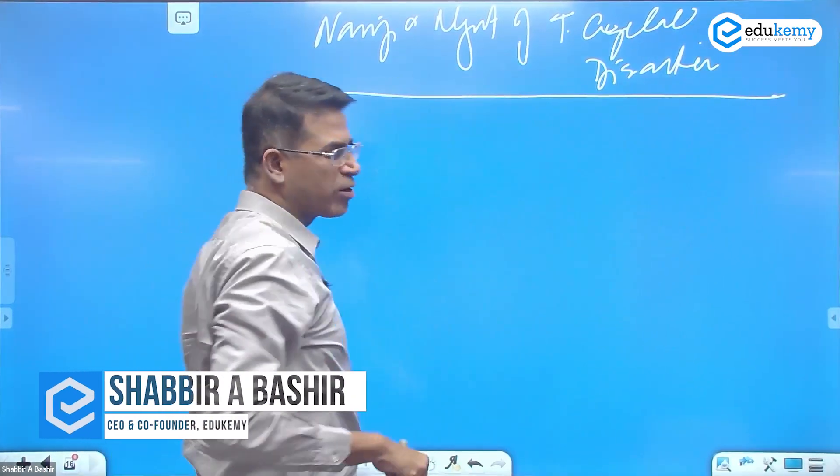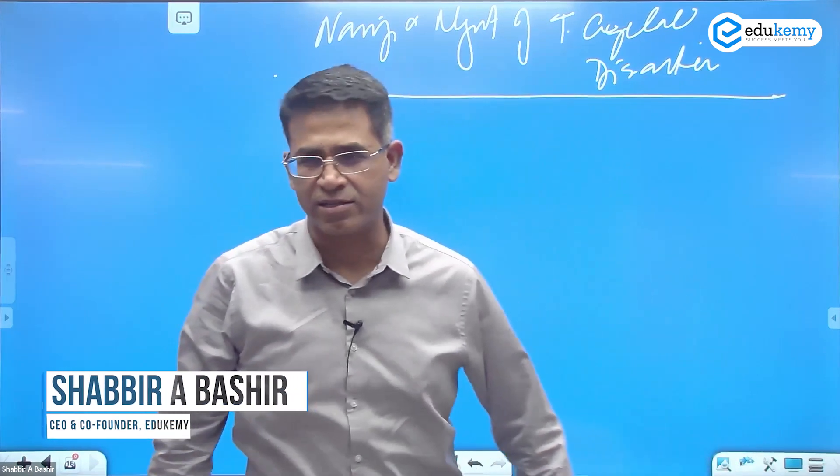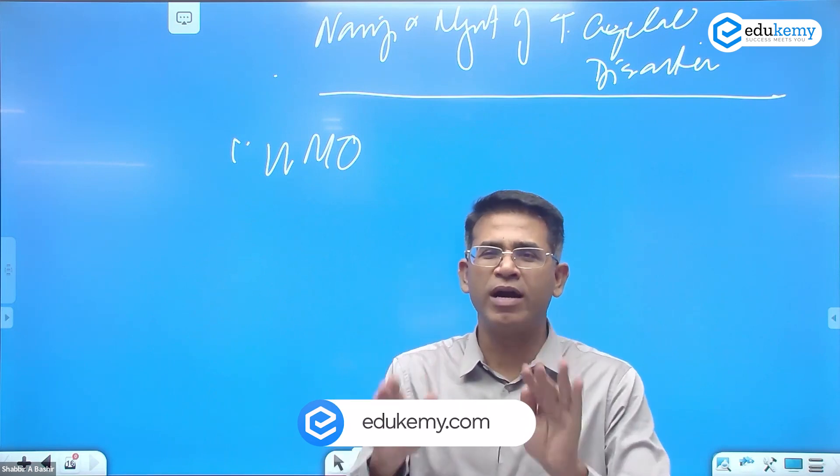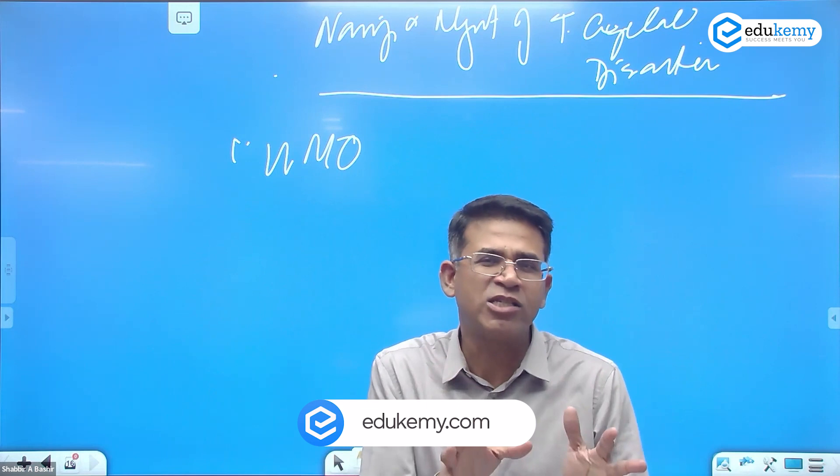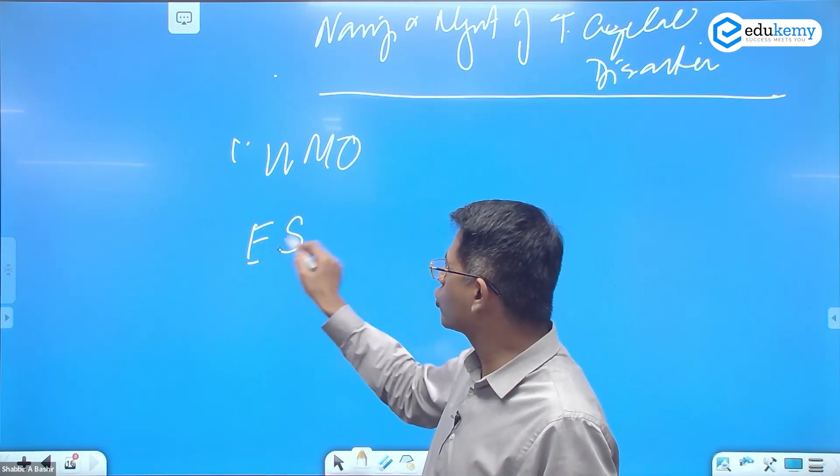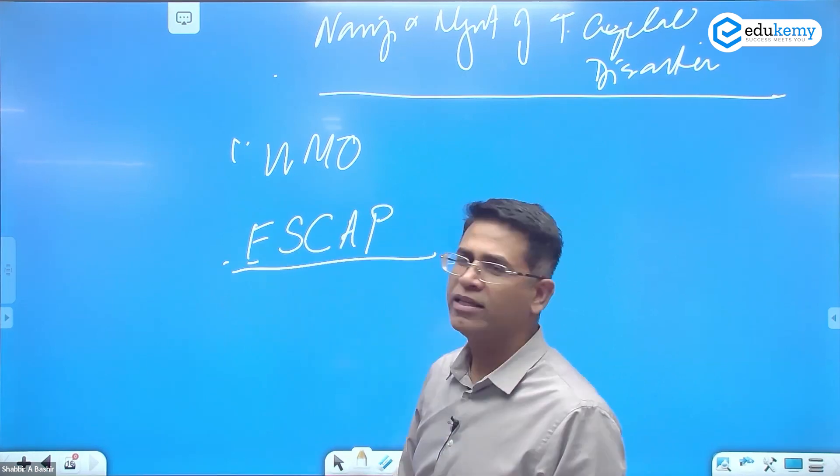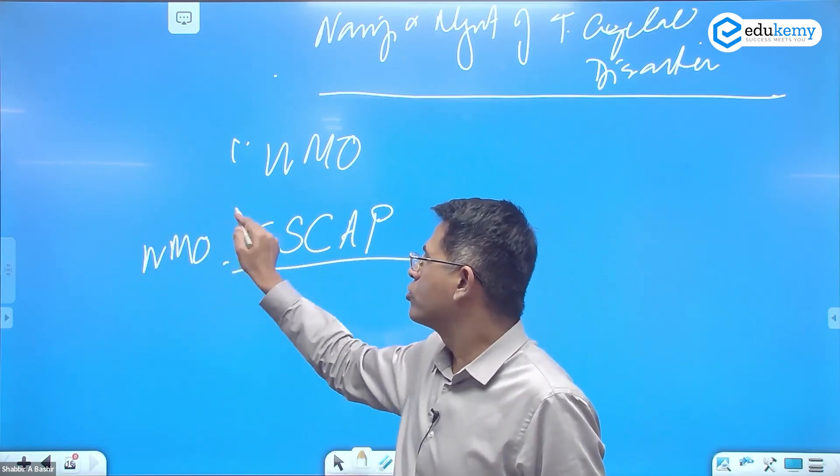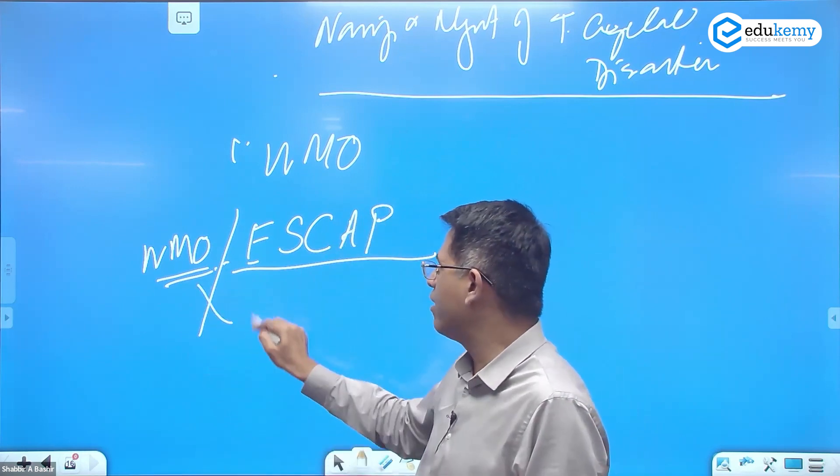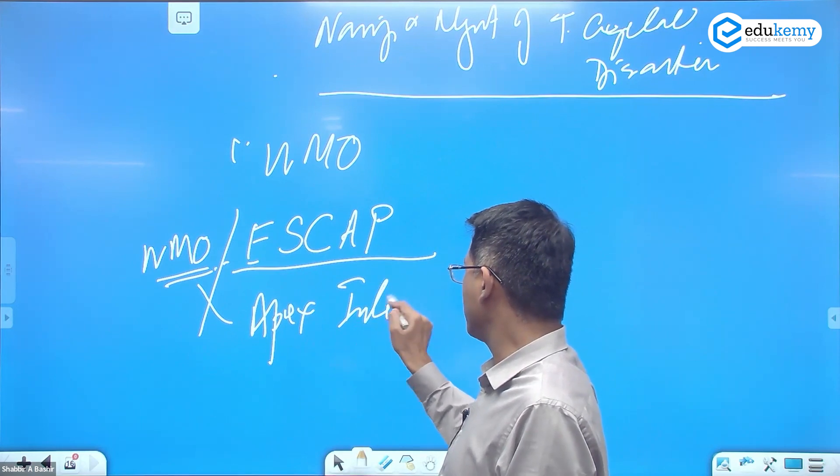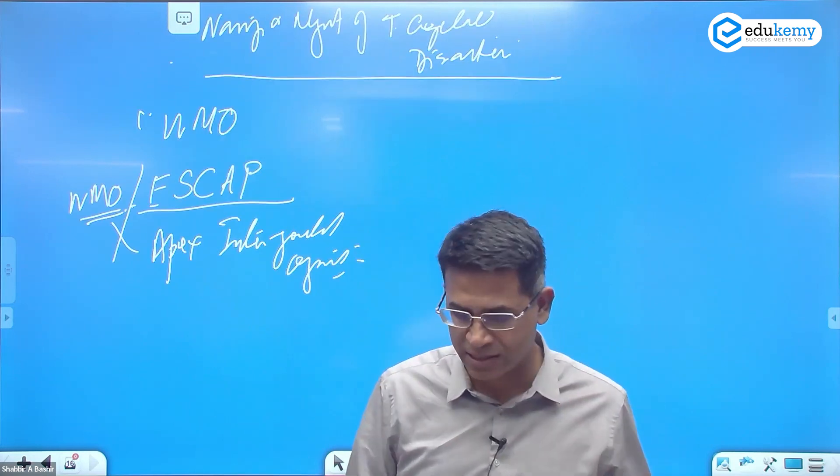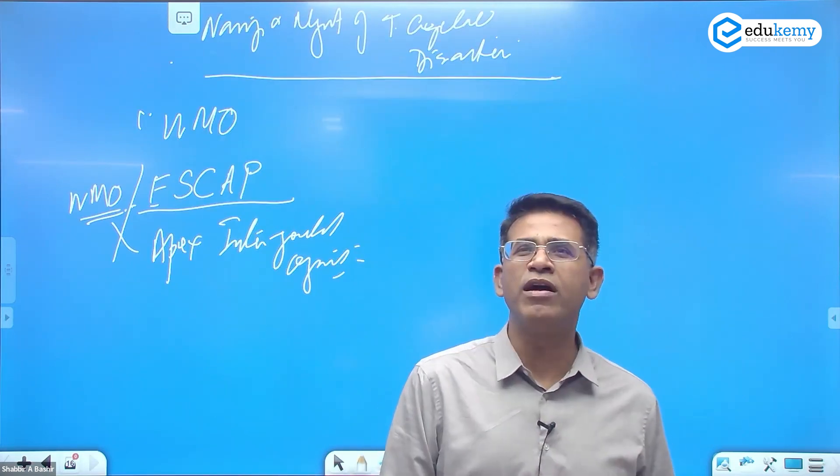This lecture covers naming and management of tropical cyclone disasters. There is an organization called WMO - World Meteorological Organization. It is a specialized organ of the UN that operates as part of the Economic and Social Council for Asia and Pacific, ESCAP. This is an apex intergovernmental organization that looks into climate studies and climate-related disasters.